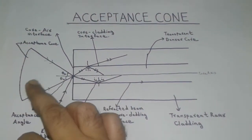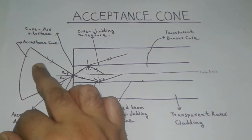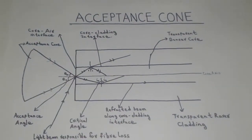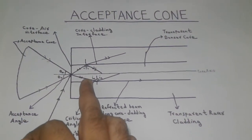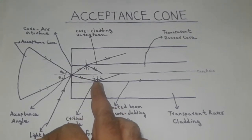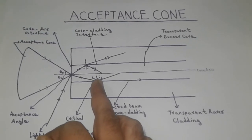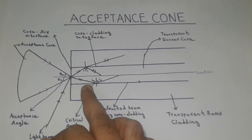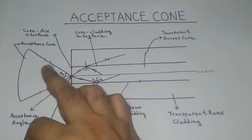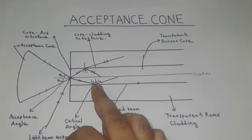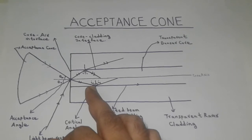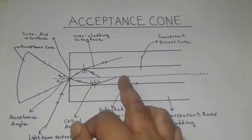For any light beam which makes an angle of incidence lesser than the acceptance angle and within the acceptance cone, the refracted beam into the denser core will bend more and more towards the normal. Thereby, the angle of incidence at the core-cladding interface will be greater than the critical angle. Hence, all the light beams which are within the acceptance cone will always make an angle of incidence greater than the critical angle and will not contribute to any fiber loss.